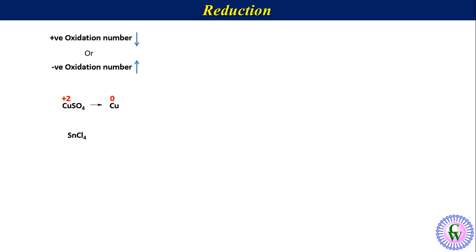Conversion of SnCl4 to SnCl2 — here the oxidation number of tin is changing from plus 4 to plus 2. Conversion of fluorine to fluoride ion — here the oxidation number of fluorine is changing from 0 to minus 1. Let's take one more example: conversion of H2O2 to water, where there is an increase in the magnitude of negative oxidation number of oxygen from minus 1 to minus 2.